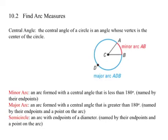I can't name it major arc AB because AB is just the minor arc. I have to add another point to it, so I go this way, ADB. We could have another point, we can name it AFB. It just has to be another point on the arc. You need three points to name a major arc, two points to name a minor arc.